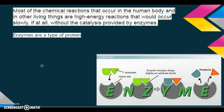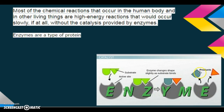So examples in real life. Most of the chemical reactions that occur in the human body and in other living things are high energy reactions that would occur slowly, if at all, without the catalyst provided by enzymes. Enzymes are a type of protein — enzymes are your catalyst in the body. So for example, here's our enzyme, the gray Pac-Man looking circle. We have our substrate, or in other words, our chemicals coming in. They go into the active site. The enzyme changes shape slightly, and that allows for a different path, which makes two new products. So the enzyme lowers the activation energy by creating a different path, and it helps the reaction occur much more quickly.